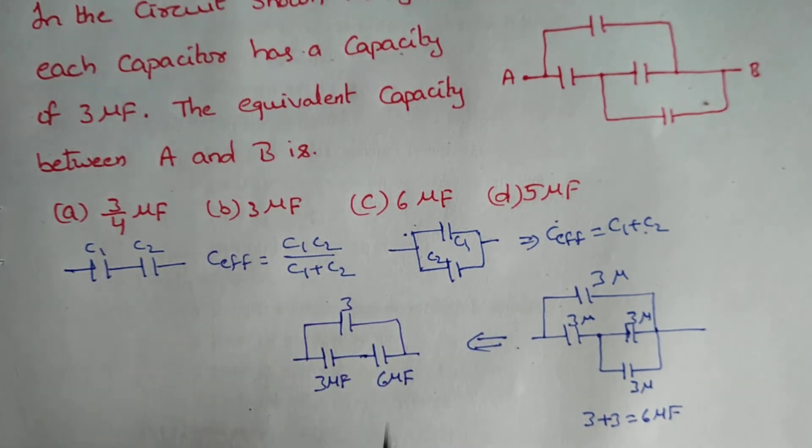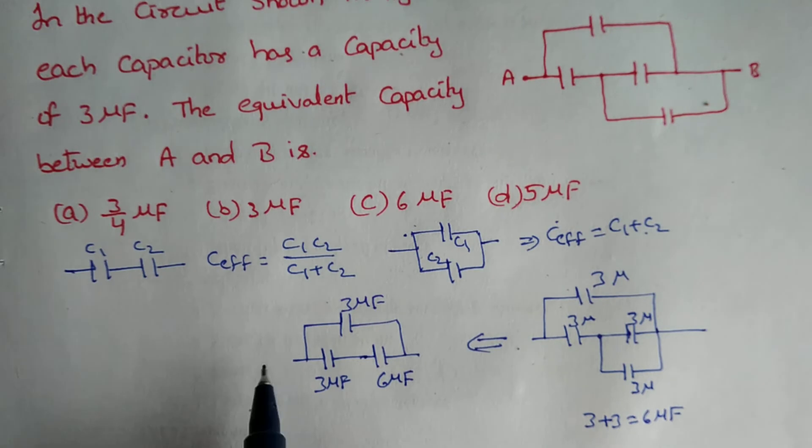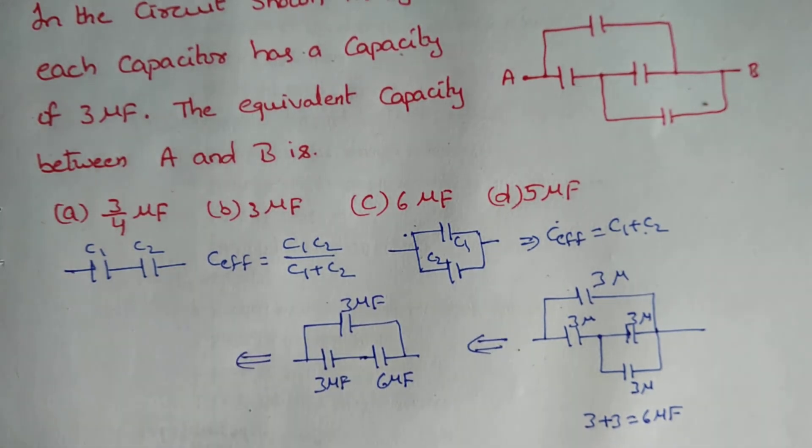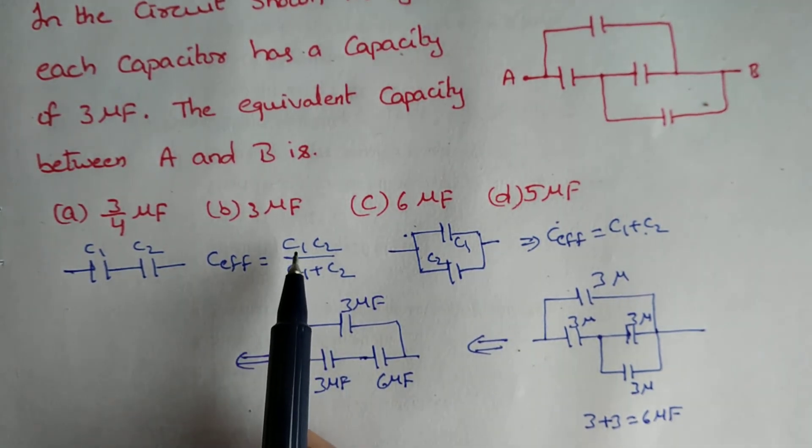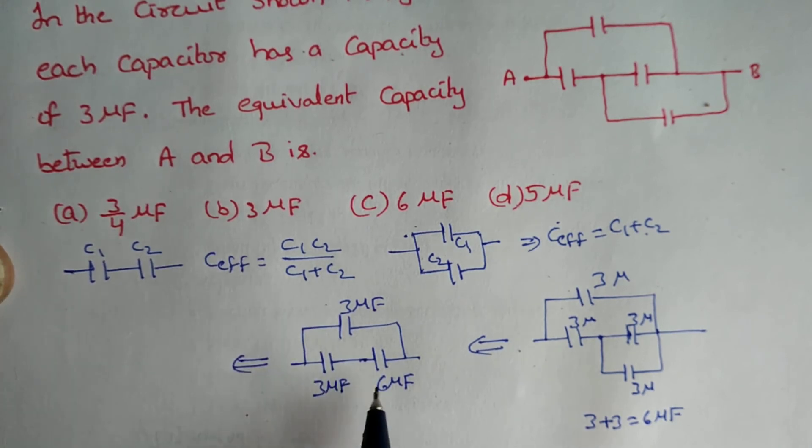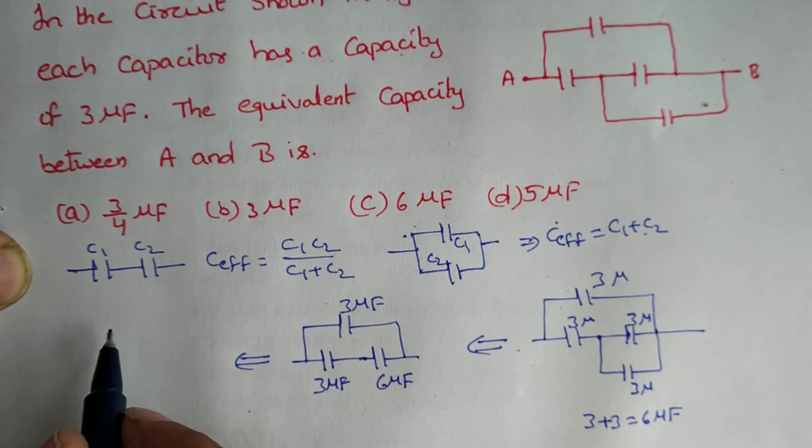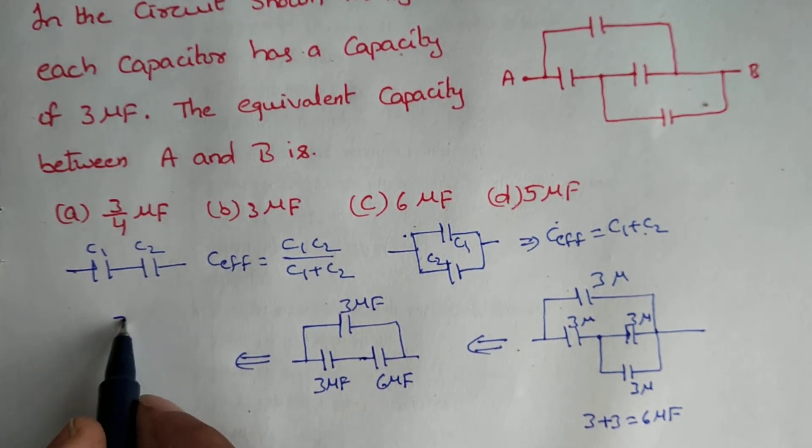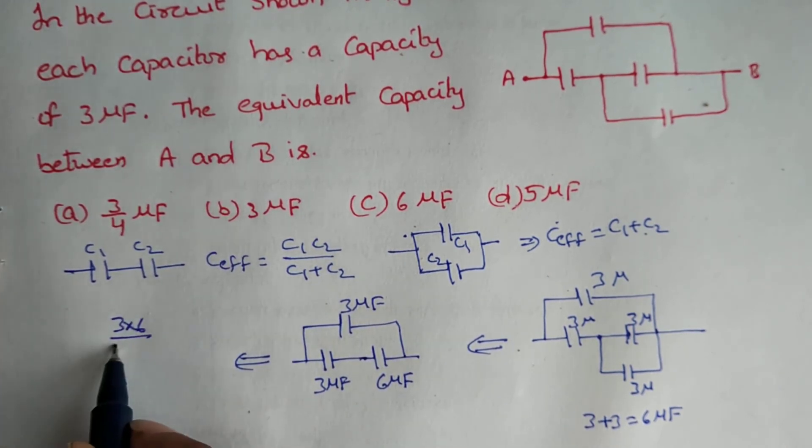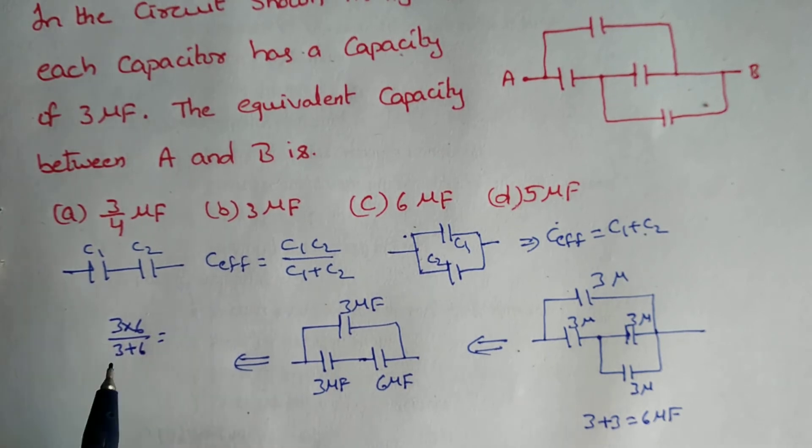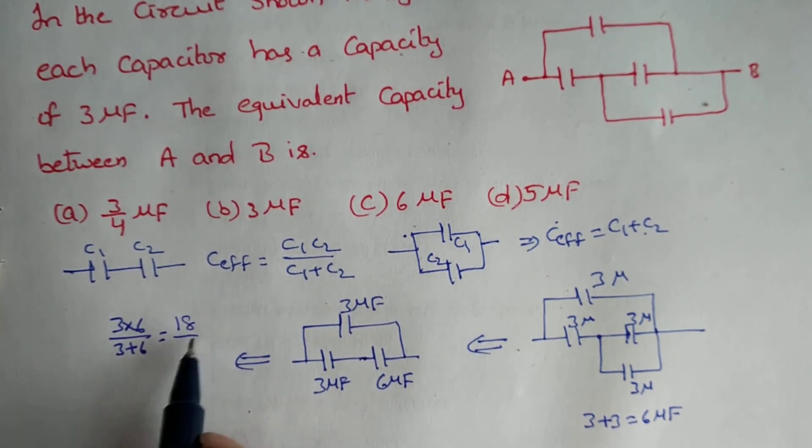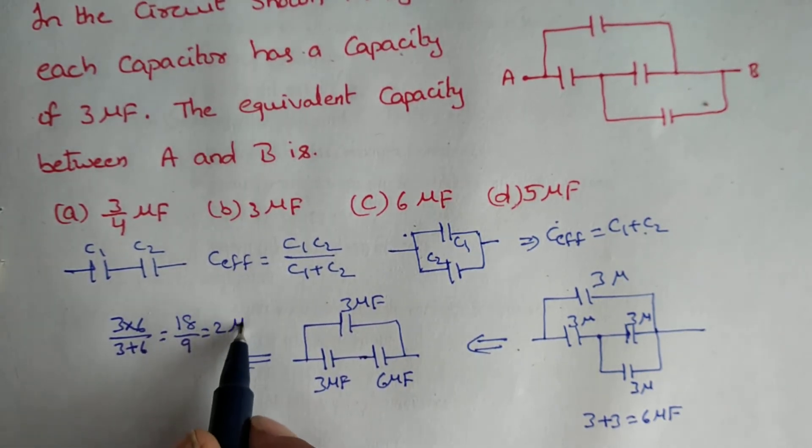This is 3 microfarad as it is. And what I said if the two capacitors are in series then we can do that C1 C2 by C1 plus C2. Here 3 microfarad and 6 microfarad are in series. So what do we get, C1 C2 that means 3 into 6 divided by 3 plus 6 that is equal to 18 divided by 9 that is equal to 2 microfarad.